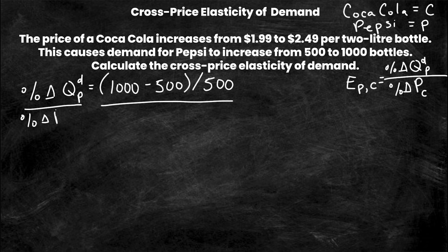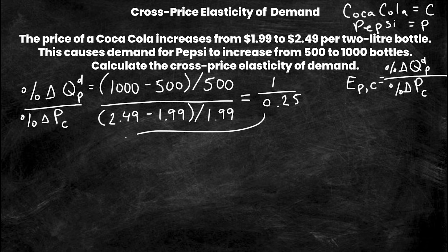So I have new minus old over old and now obviously the formula says that this needs to be over percentage change in P for Coca-Cola. So I'm going to take new minus old over old. Well the new price of Coca-Cola is $2.49, the old price is $1.99 divided by the old price is $1.99, and we'll see what this equals. $1000 minus $500 is equal to $500 over $500 is equal to $1. Let's take a look at the denominator. So we have $2.49 minus $1.99 which is equal to $0.50 over $1.99 which is equal to approximately $0.25. That is $0.50 is approximately one quarter of $2. So now we have this and obviously we're going to carry this down, we're going to write this as an integer. So $1 over $0.25 is $4. My elasticity of Pepsi in terms of price of Coke is equal to $4.